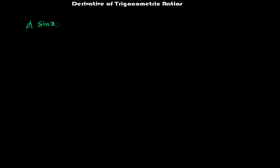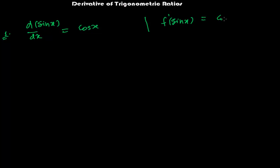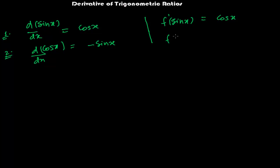Let's learn the six basic trig derivatives. The first one: the derivative of sin x is cos x. You may also see this written as (sin x)' = cos x — just a different notation. The second one: the derivative of cos x is −sin x, where x is the angle.